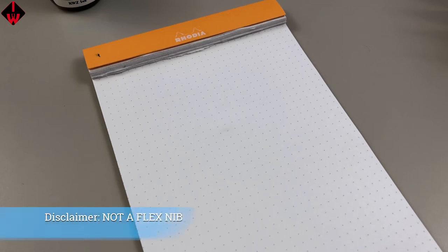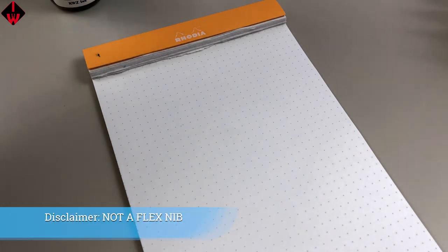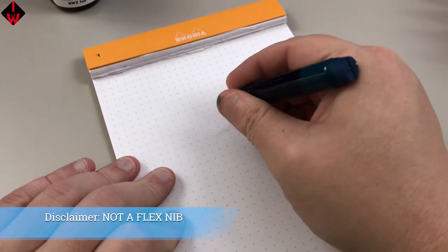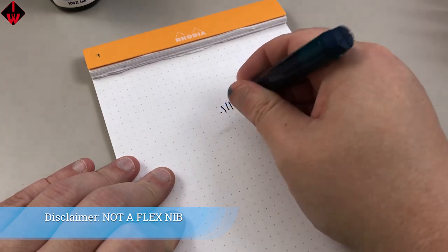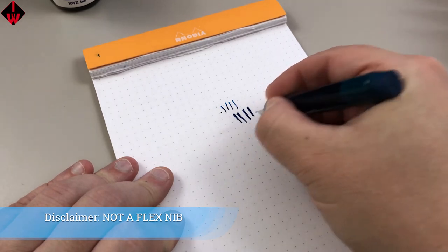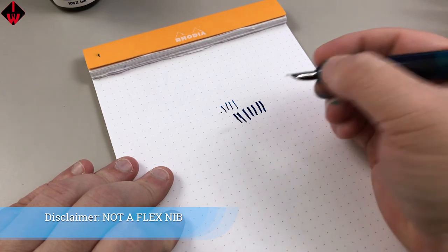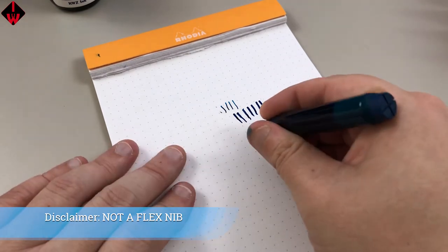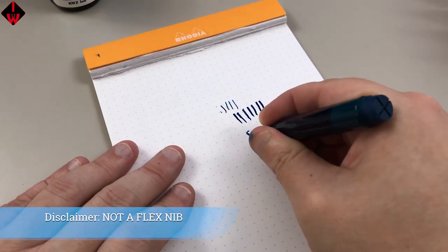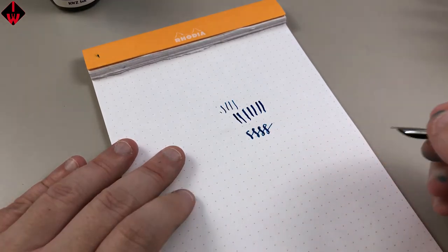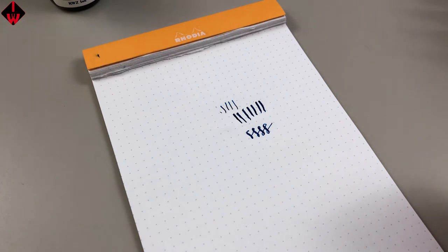This nib is a broad nib, we've already talked about that. But what we didn't talk about was it actually has a little bit of line variation to it. Standard broad, standard broad, and you can push it a little. I'm actually not putting that much pressure on the pen and I was getting that much line variation. So you can have some fun with the nib. I would have felt horrible if I did the entire review, got it all put together and then forgot that. So there you go, back to the review.